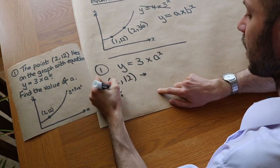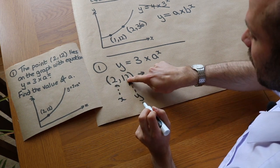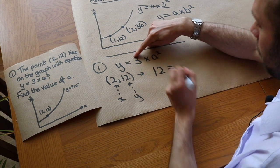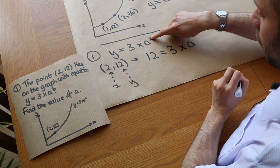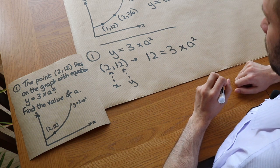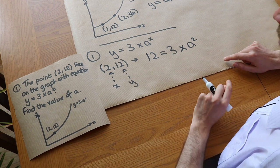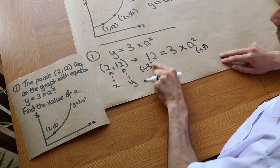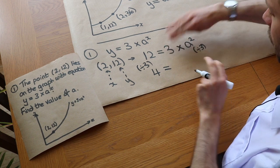Since (2, 12) is on the line, we substitute the values in. The x value is 2 and the y value is 12. So we get 12 equals 3 times a to the power of 2. To solve this, we divide both sides by 3, giving us 4 equals a squared.